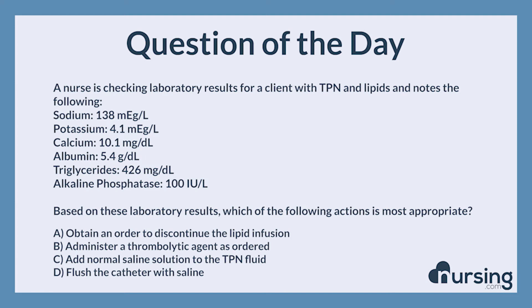Based on these laboratory results, which of the following actions is most appropriate? A. Obtain an order to discontinue the lipid infusion. B. Administer a thrombolytic agent, as ordered. C. Add normal saline solution to the TPN fluid. D. Flush the catheter with saline. The correct answer is A: Obtain an order to discontinue the lipid infusion.